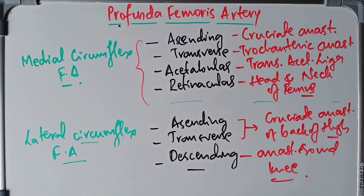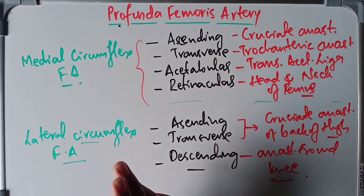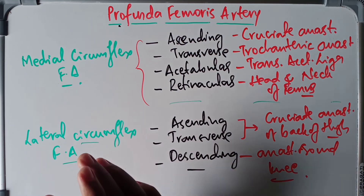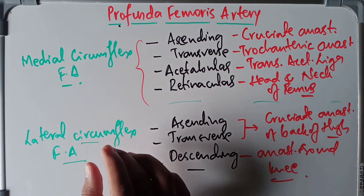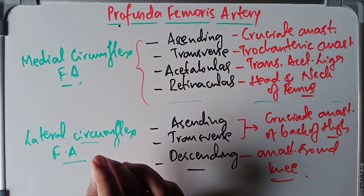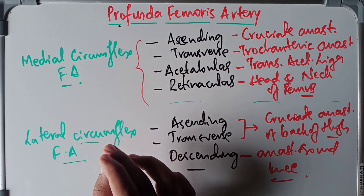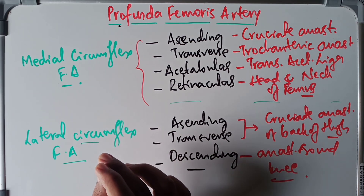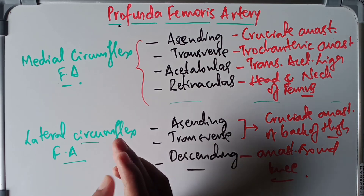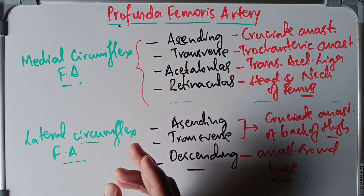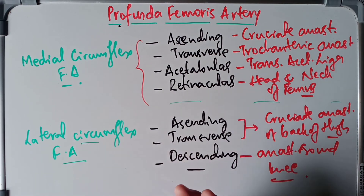A small clinical significance of the profunda femoris artery: it is of great clinical importance because it is deeply located and lies in close proximity to the femoral shaft. Hence, it is more prone to injury in fractures of the femoral shaft, and is also liable to injury during surgical procedures such as fixing metallic screws in the femur by an orthopedic surgeon.